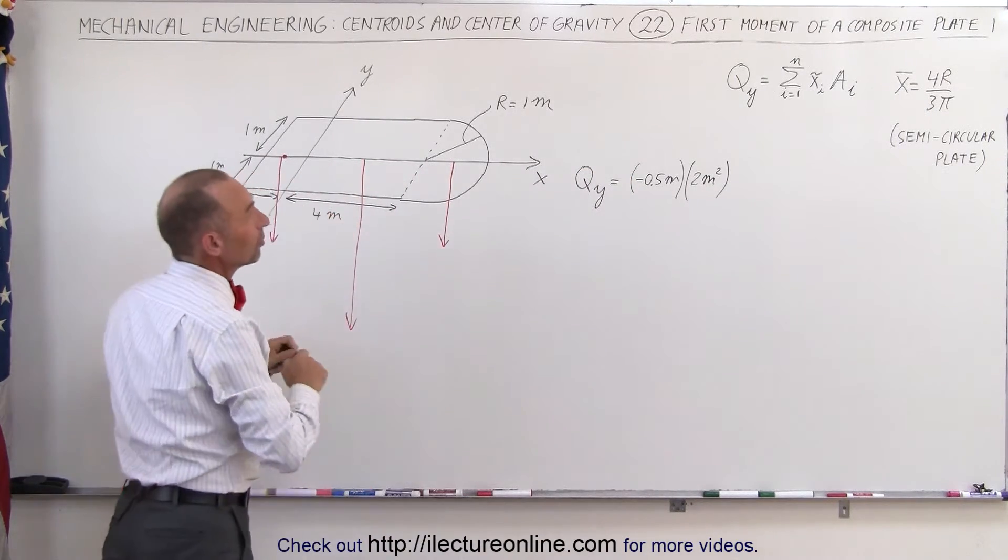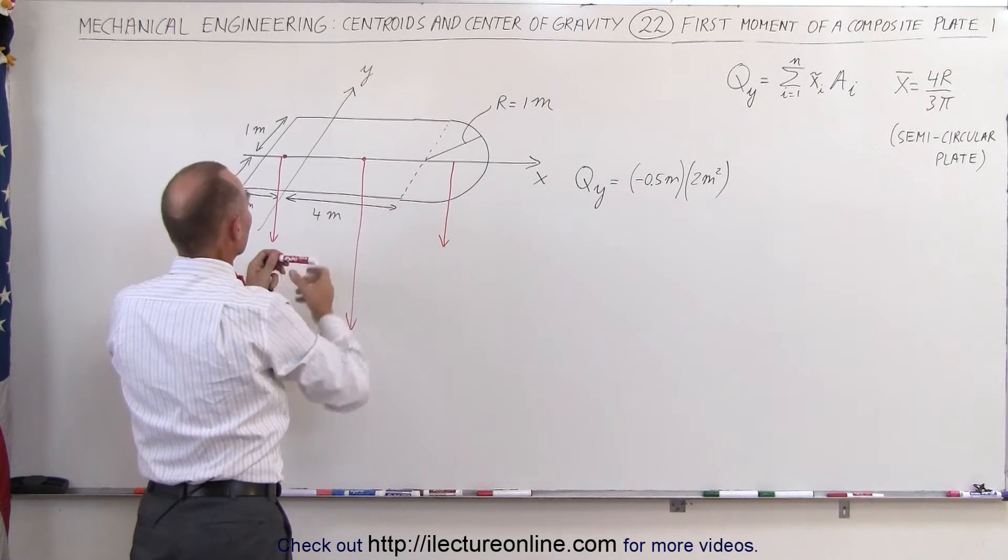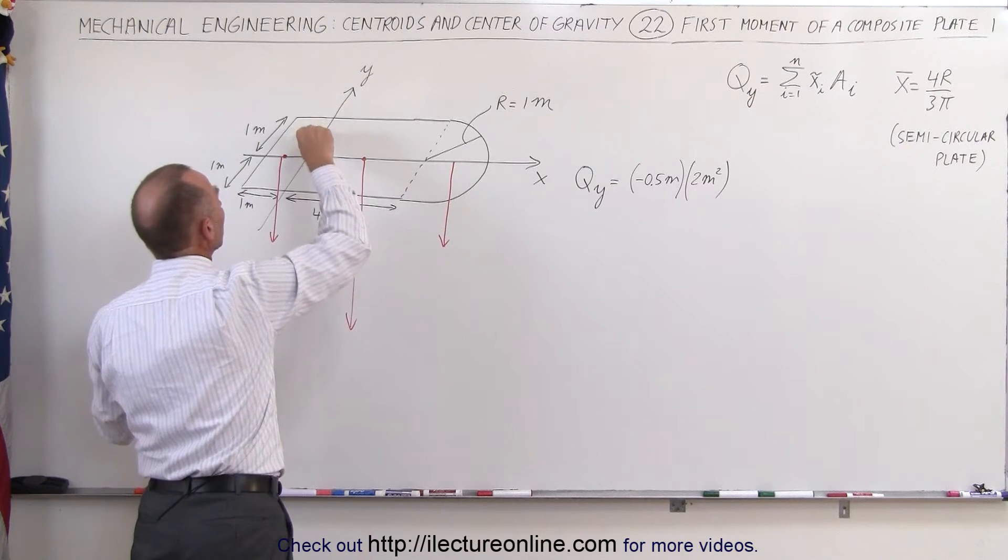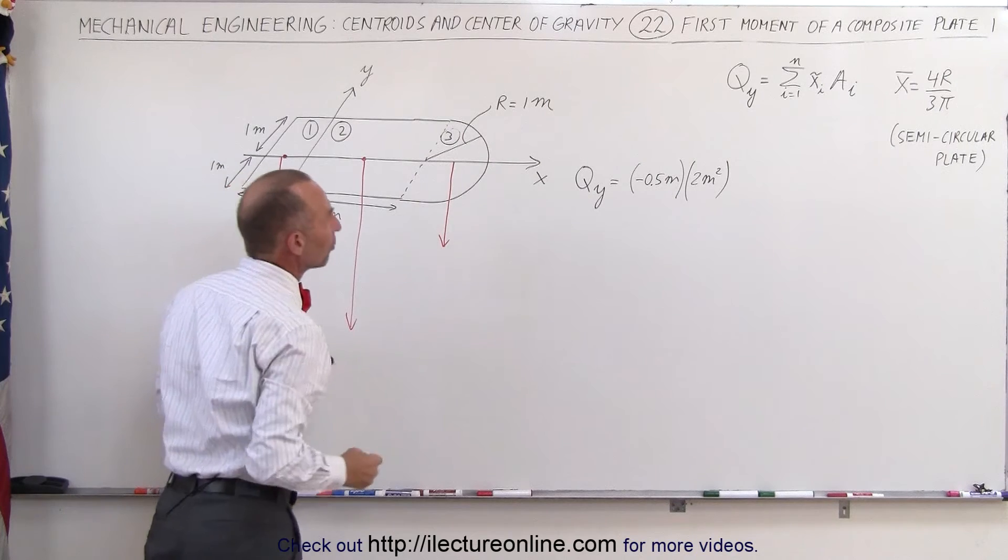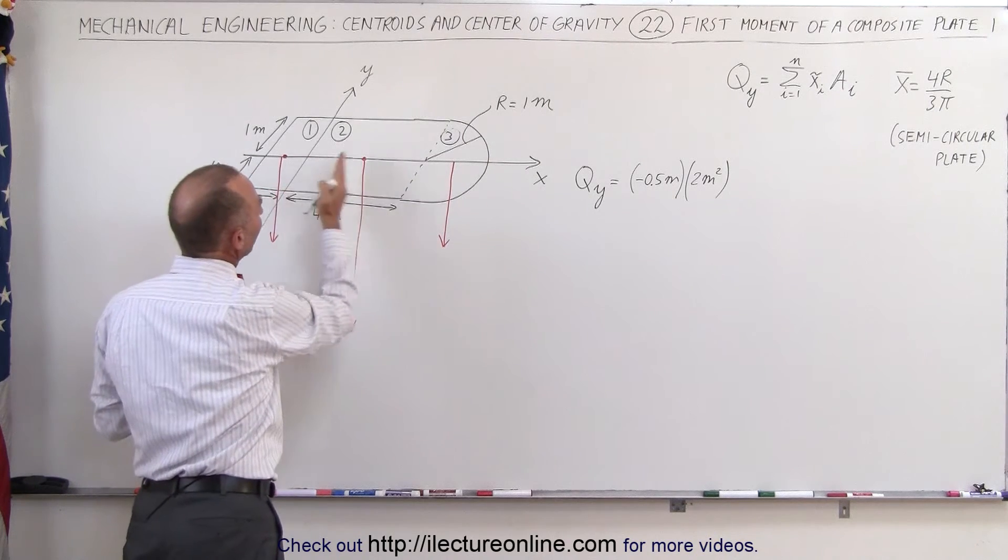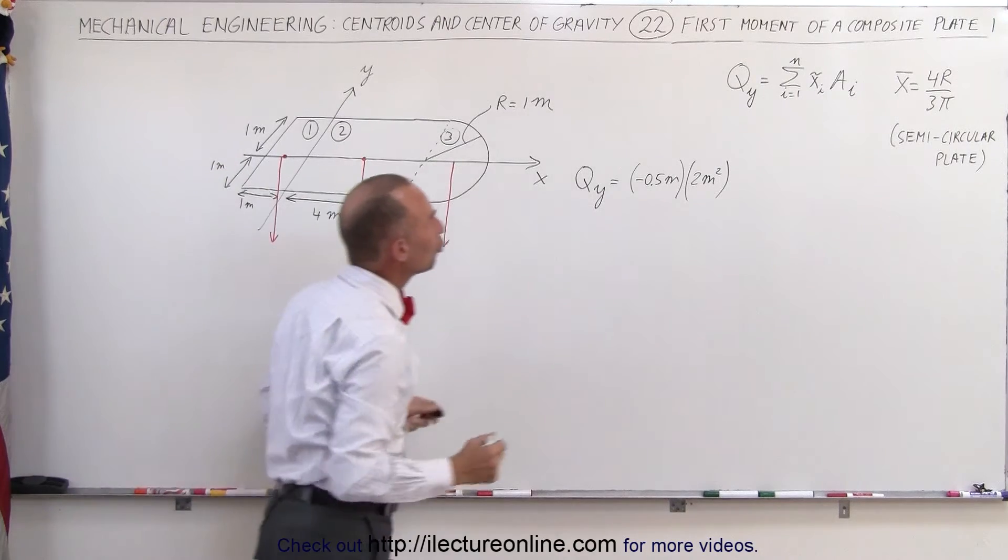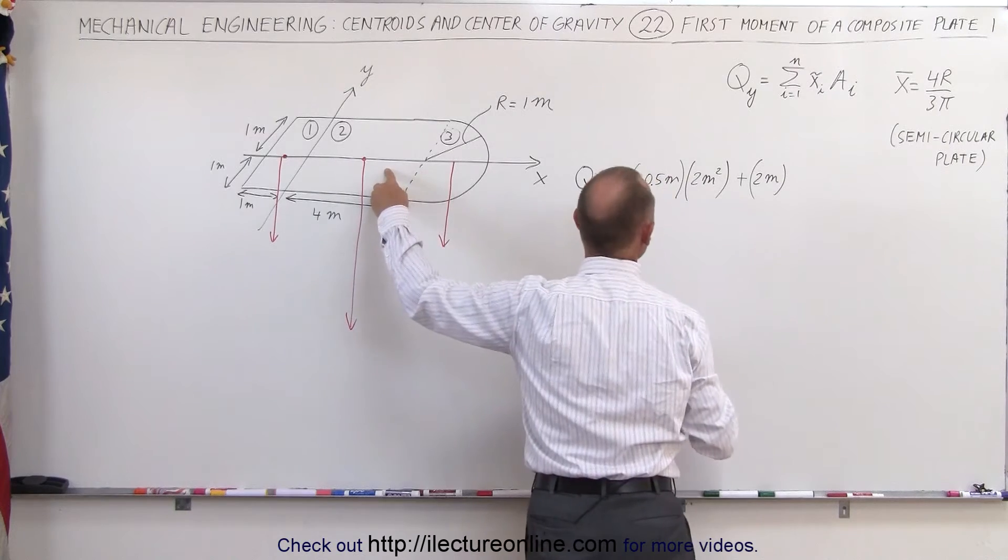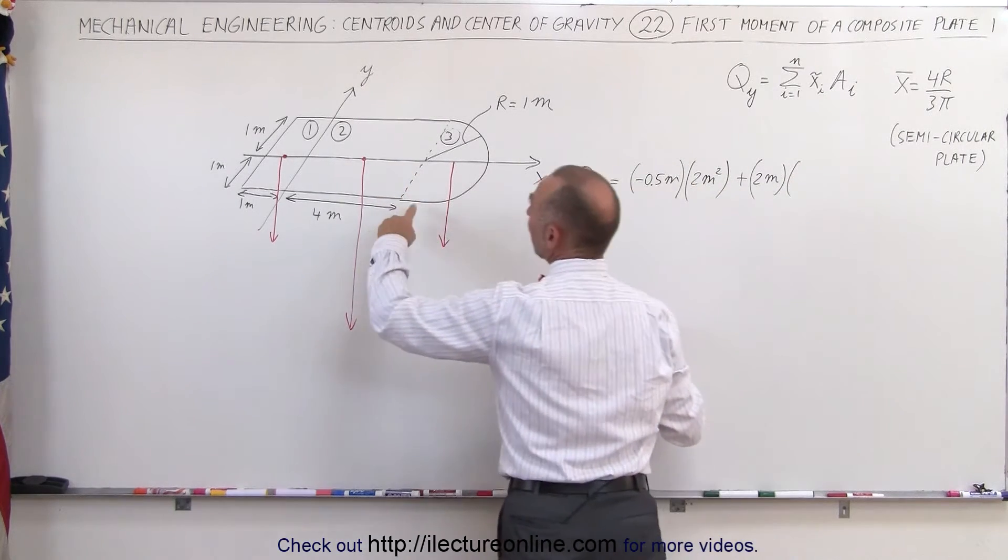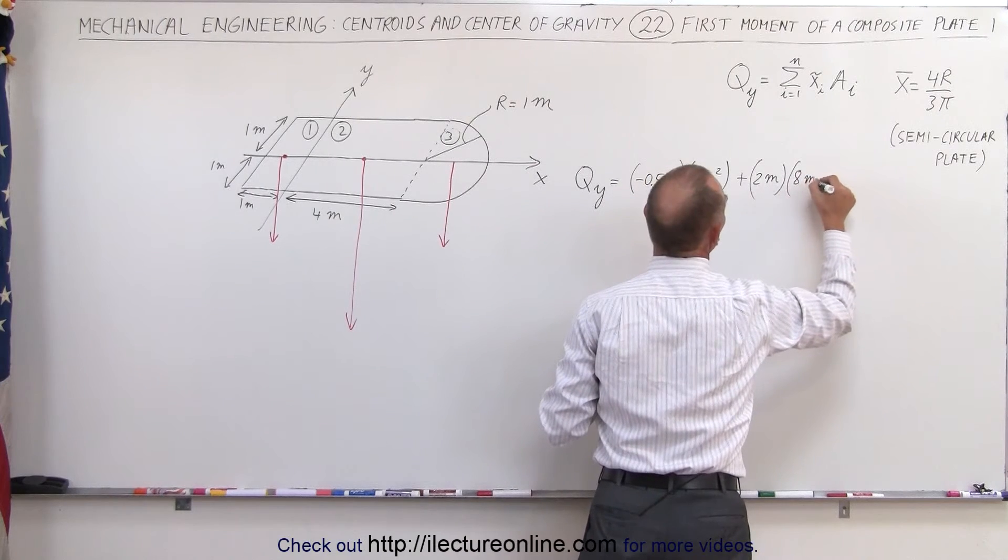The x-coordinate of the center mass on the right side of this rectangular piece, notice we call this piece number 1, call this piece number 2, and call this piece number 3. So for the second piece, it would be halfway between this point and this point. It's 4 meters wide this way, that would be 2 meters, plus 2 meters, which is the x-coordinate center mass of the second piece, multiply times the area. It's 2 meters wide, 4 meters long, that's 8 meters squared.